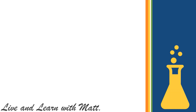Now let's take a look at the guidelines to protect the life cycle of animals. Animals are important to Earth and they help to keep the balance of nature. We should protect animals so that they will not disappear. One way to protect animals is to care for their life circles.